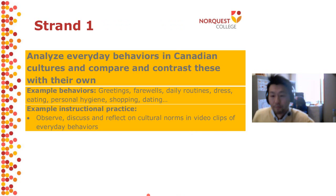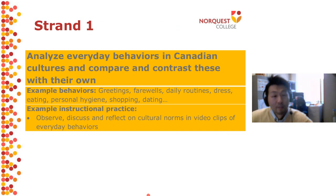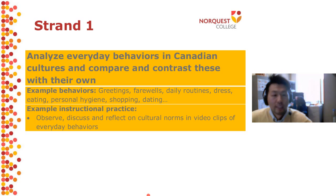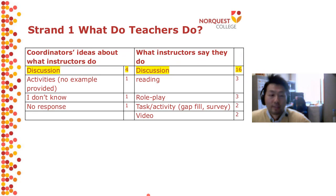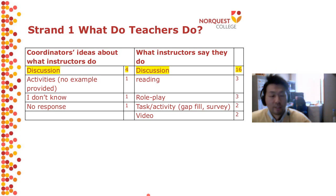So Strand Four may be taught the most because it generates discussion topics and there are more employment-related things surrounding it. Now let's move on to Strand One, which was reported to be taught the second most. It's about analyzing everyday behaviors in Canadian culture and comparing and contrasting these with students' own cultures. Example behaviors are greetings, farewells, daily routines, eating, personal hygiene, shopping, and dating.